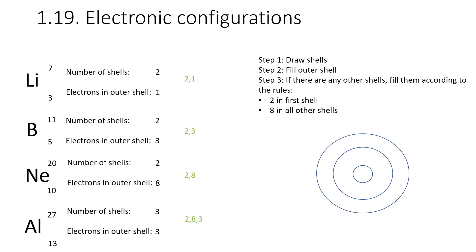If you need to draw an atom based on this information, here's what you should do: count the number of periods and draw that many shells — in this case three shells for a period three element. Fill the outer shell using the group number, then fill the remaining shells according to the rules: two in the first and eight in any other shell. So for aluminium, put three electrons on the outer shell, then fill the middle shell with eight and the inner shell with two. Notice that the electrons are paired up — you don't have to do this, but it makes it easier for markers and helps you keep track.